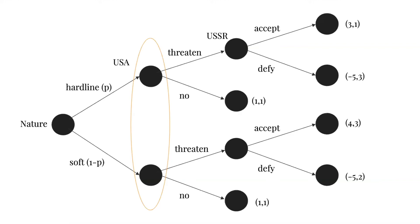And if you're wondering what that little orange circle is all about, that is an information set, because the United States doesn't know which node they're at, because again, they don't know if the Soviets are hard or softline.